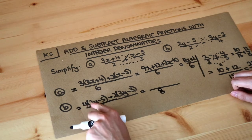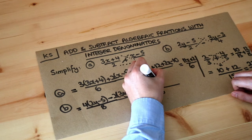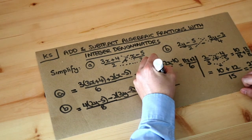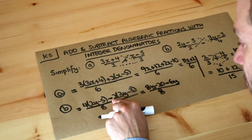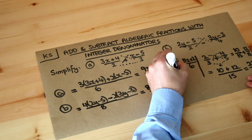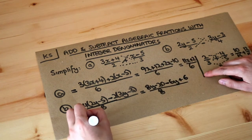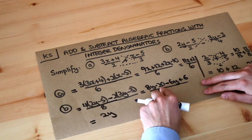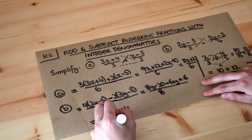If we expand this out, four times two y is eight y. Four times minus five is minus 20. Minus two times three y is negative six y. And this is where it's so easy to get it wrong. Minus two times minus three is plus six. It's a very common student error to put minus six there. And then if we simplify, eight y minus six y is two y. Minus 20 plus six is minus 14. And it's all over eight.